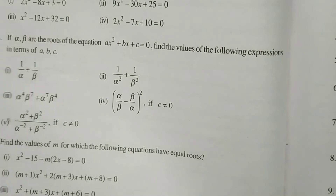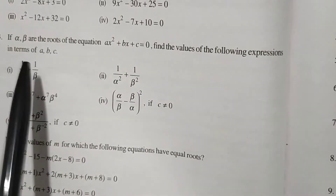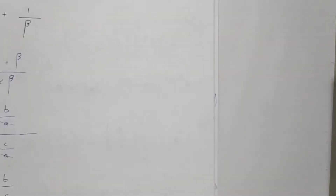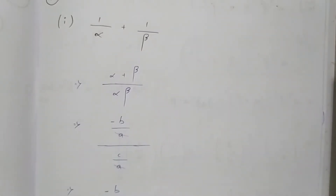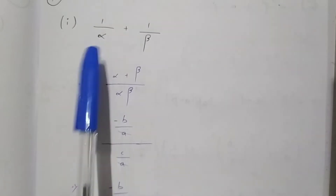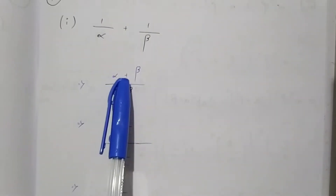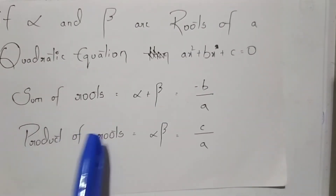Now coming to the given question — the question has five expressions and we need to find the values of these five expressions in terms of a, b, and c. The first expression given was one by alpha plus one by beta. When we take LCM as alpha into beta, we get the numerator as alpha plus beta. As we all know, alpha plus beta, the sum of roots, will be minus b by a, so we substitute the value of alpha plus beta as minus b by a.